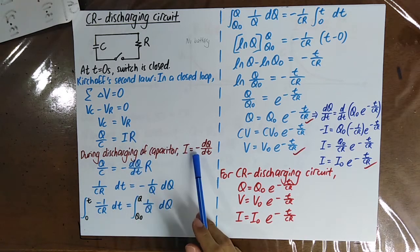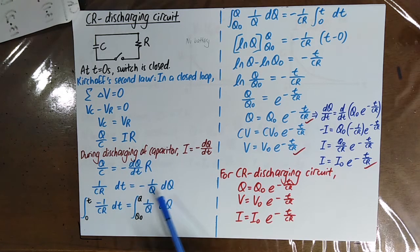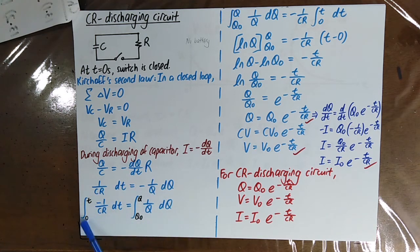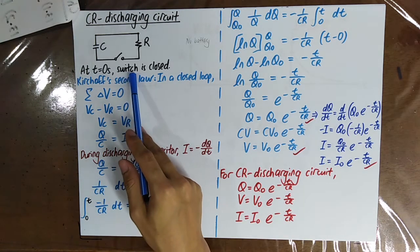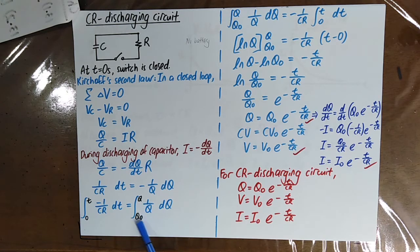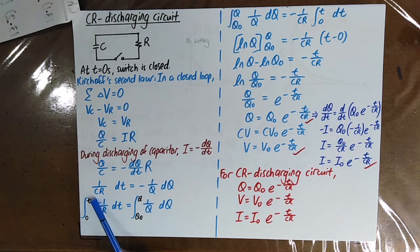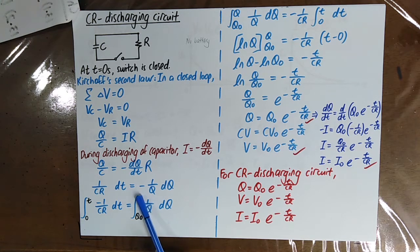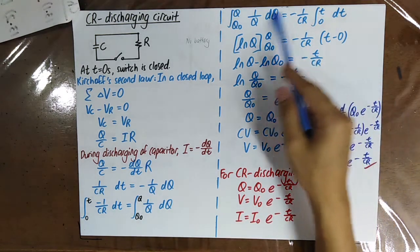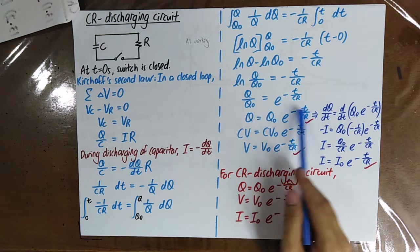You substitute I equal to negative DQ over DT. When you see DT and DQ, you know you are going to perform integration. When time is zero — when the switch is just closed — the amount of charge on the capacitor is maximum, which is Q naught. At time T, which is a variable, the amount of charge remaining on the capacitor is Q, which is also an unknown amount.